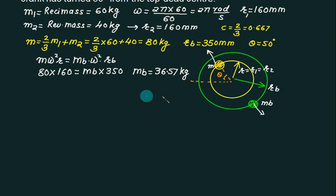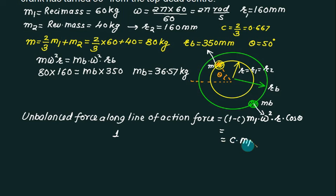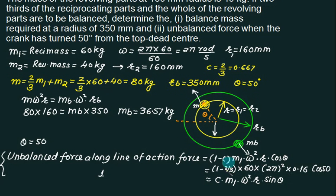The unbalanced force along the line of action is due to M1 and equals (1 - C) × M1 × ω² × R × cos θ. Perpendicular to the line of action, the unbalanced force equals C × M1 × ω² × R × sin θ. Substituting C = 2/3, M1 = 60 kg, ω = 2π rad/s, R = 0.16 m, and θ = 50°, we compute both components.